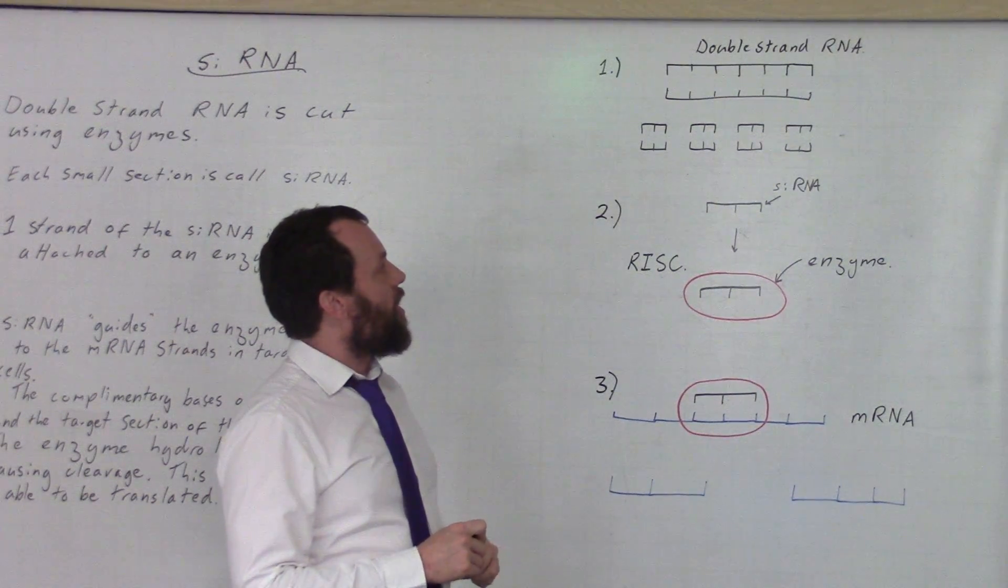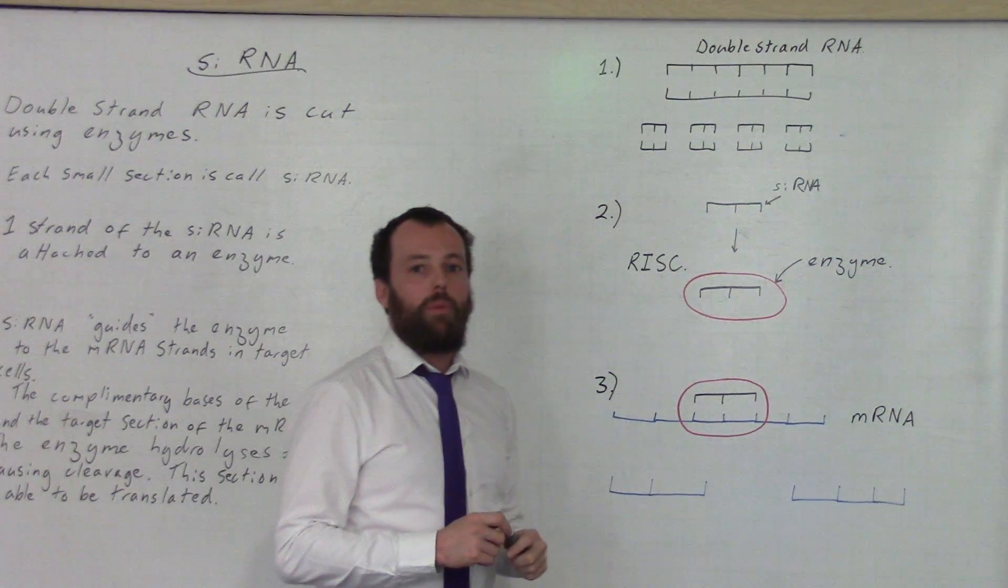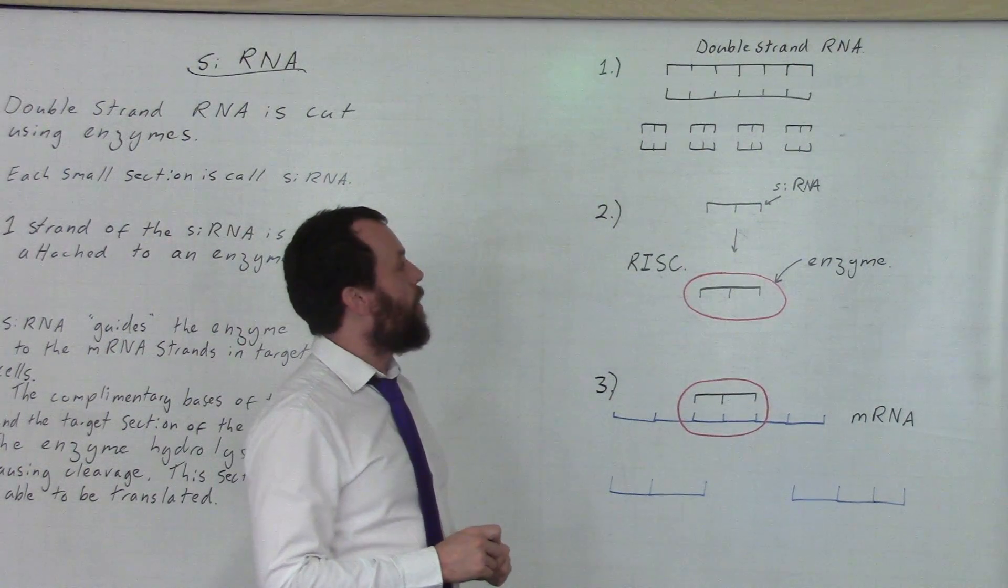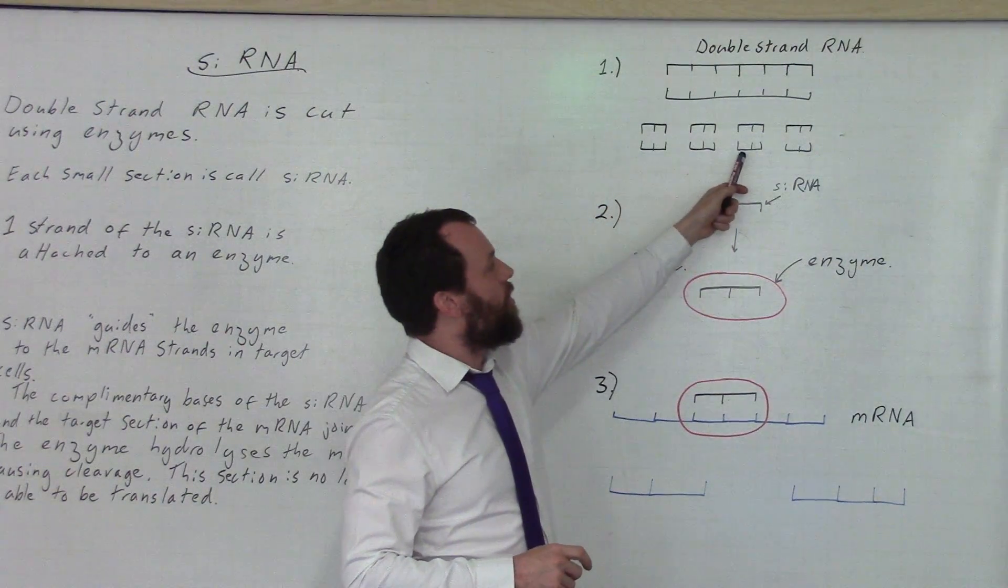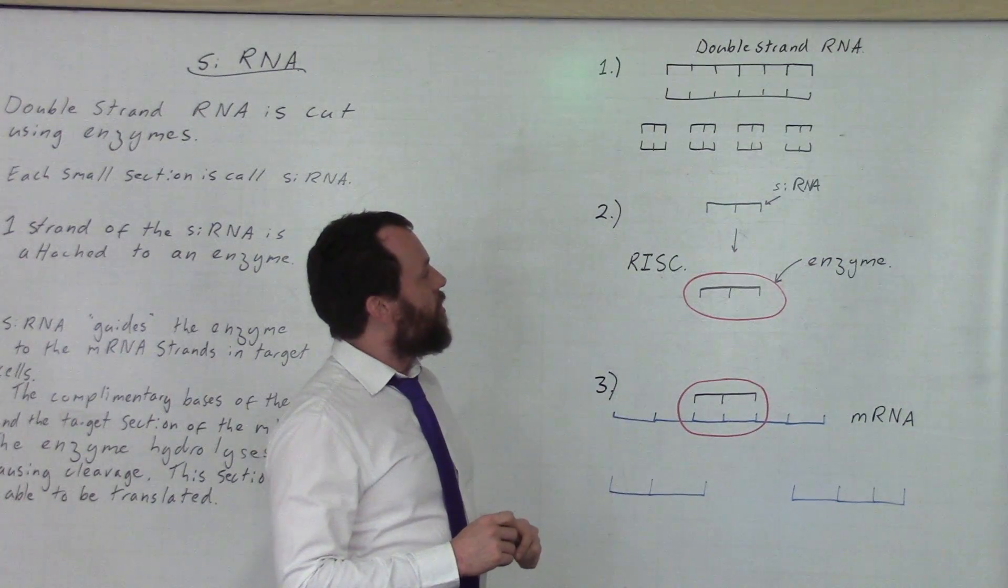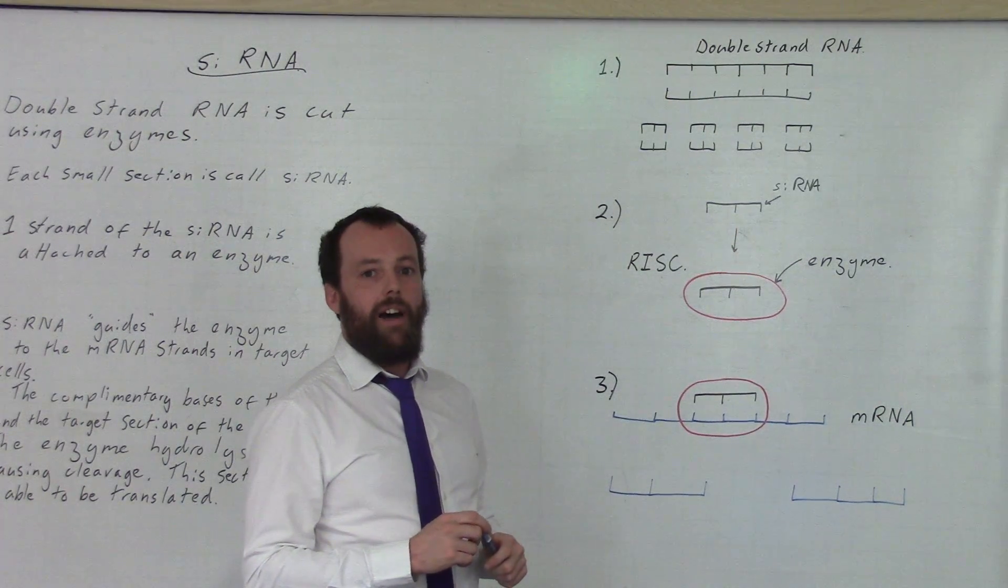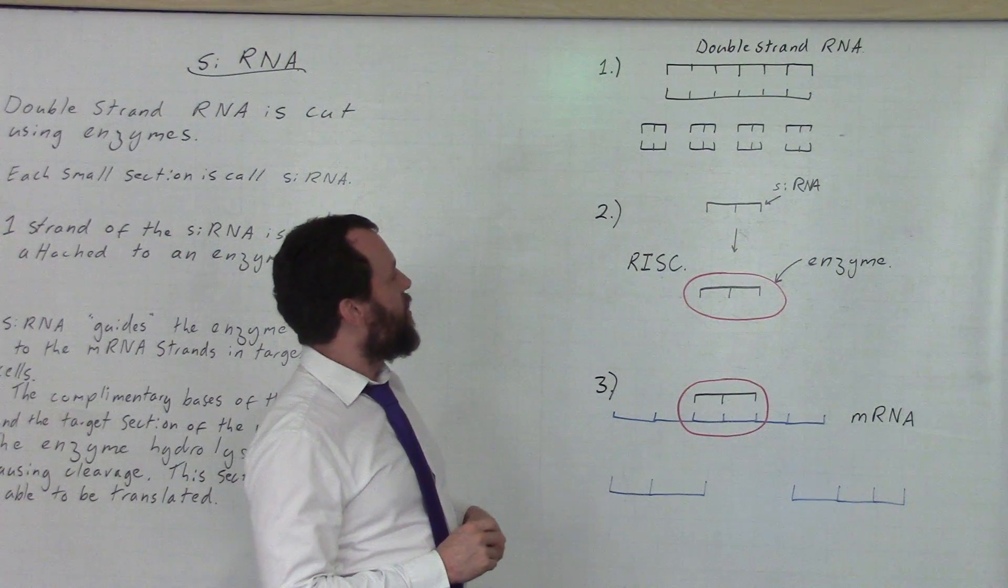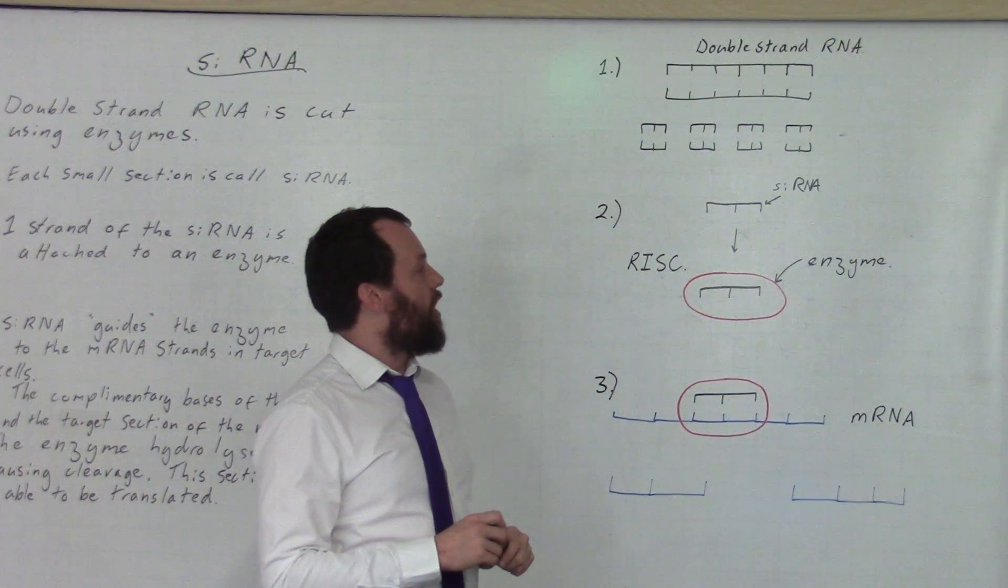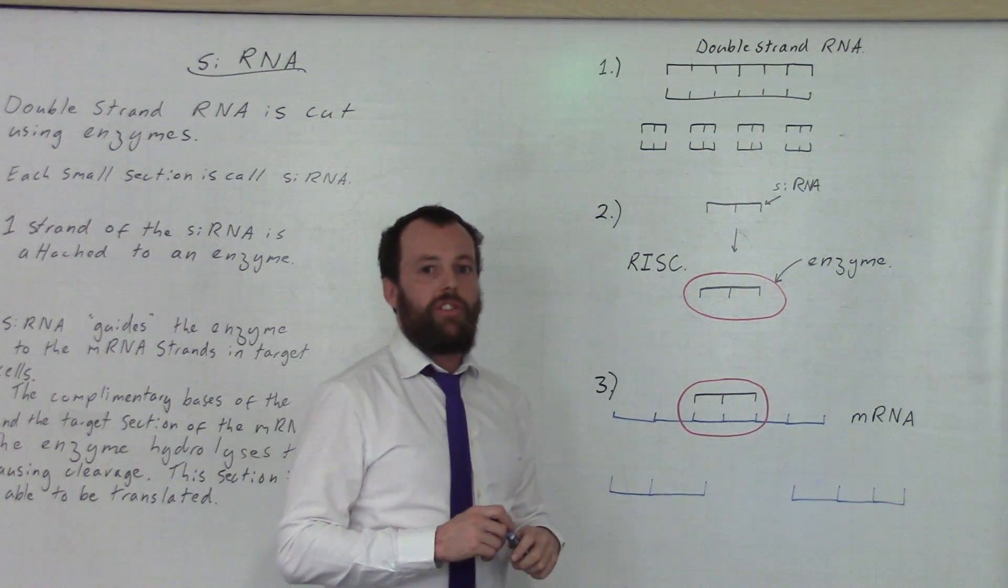The first step with siRNA is to get yourself a double strand of RNA. This double strand of RNA is then broken down into smaller units using enzyme action. Each one of these smaller units is called an siRNA. You'll notice in the second stage that only one of the strands is used for the siRNA. The other strand is discarded.